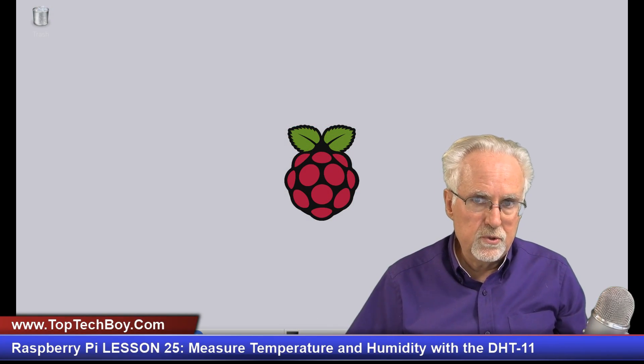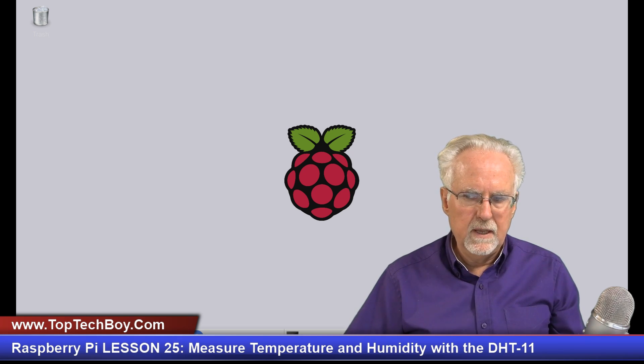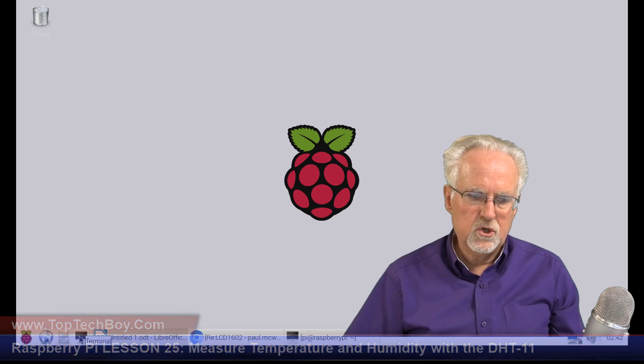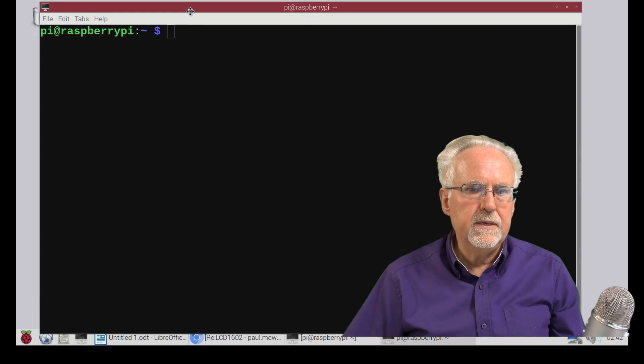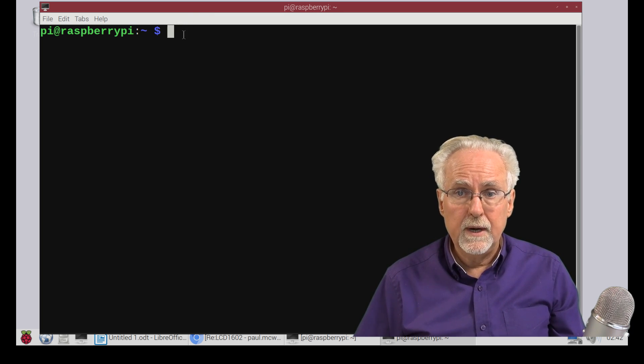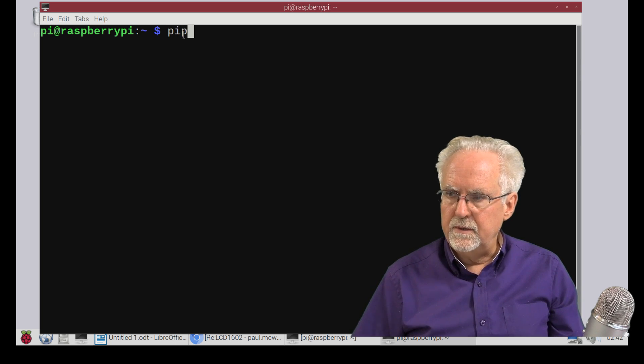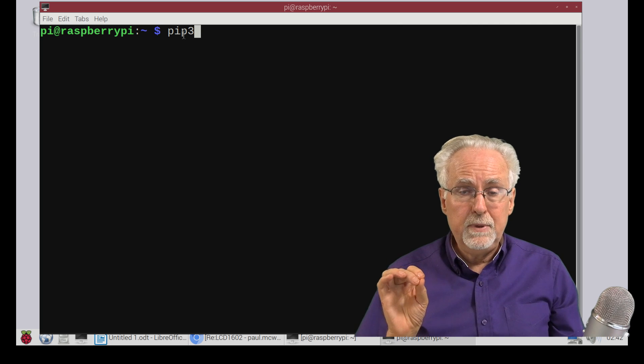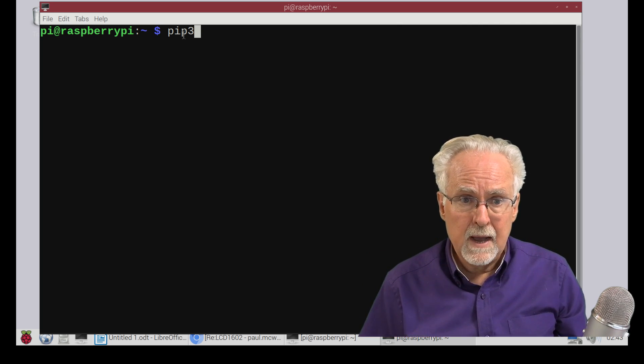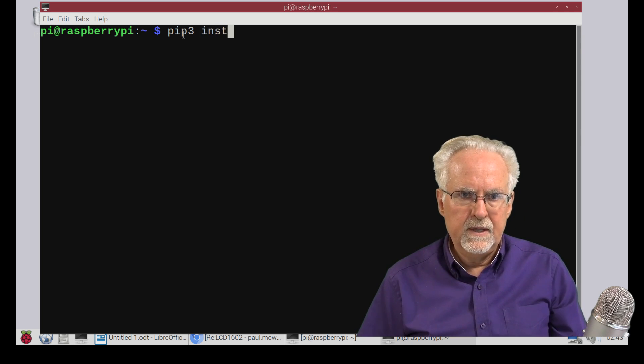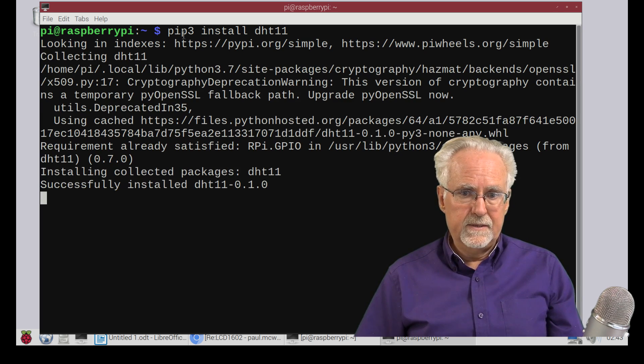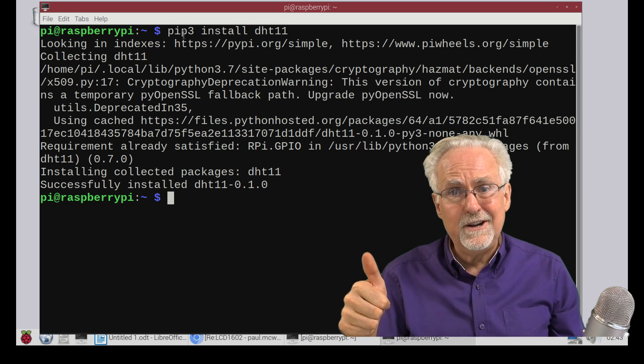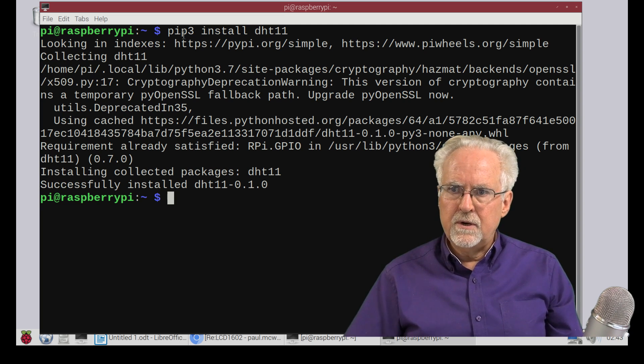Now what I'm going to need you to do is fire up a terminal. So down here in the bottom left, you see this little terminal icon, fire that up. And now we need to install the Python library for the DHT11. And it's pretty easy to do. You're going to do a PIP3. If you just do PIP install, it'll put it in Python 2.7. If you want it to go into your Python 3, you need to say PIP3. And then you're going to say install DHT11 like that. Boom. Look at that. Successfully installed, we've got ourselves a library. Let's close this terminal now.